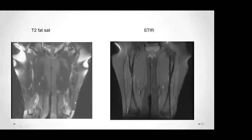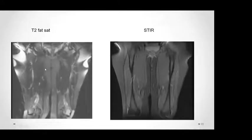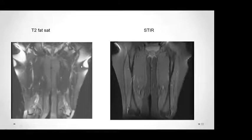Here we have two examples of the same patient who underwent T2 fat-saturated sequence on the left and STIR sequence on the right. You can see the inhomogeneity of the magnetic field and failure of fat saturation on the left. When you switch to STIR sequence, you overcome that problem.